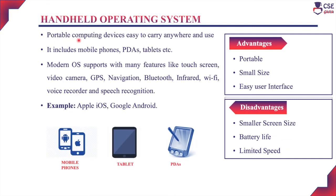Next, handheld operating system. These handheld devices are portable computing devices which are easy to use and carry anywhere. They have limited screen size and computing power. They include mobile phones, PDAs, tablets, etc. In these devices, the OS supports many features like touch screen, video camera, GPS, navigation, Bluetooth, infrared, Wi-Fi, voice recorder, and speech recognition. Examples: Apple iOS, Google Android. The advantages include they are portable, smaller in size, and the operating system provides an easy user interface. Disadvantages include smaller screen size, performance is limited to battery life, and limited speed.